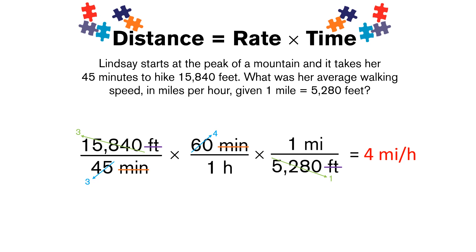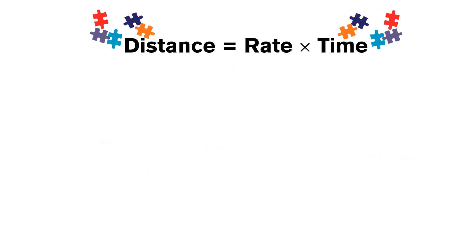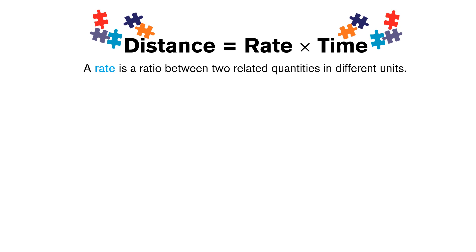So that's really just a units conversion problem, similar to the warm-up problems. This leads into the distance equals rate times time formula. A rate is a ratio between two related quantities in different units. The one we just worked with is speed, which is distance over time — the example you're probably most familiar with is miles per hour.